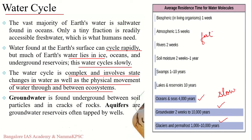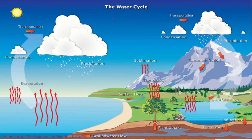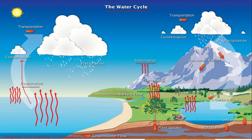The water cycle is driven by the sun's energy. The sun warms the ocean surface, causing water to evaporate and ice to sublime. Therefore, water in the form of water vapor enters into the atmosphere.